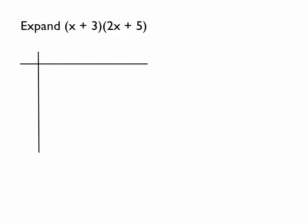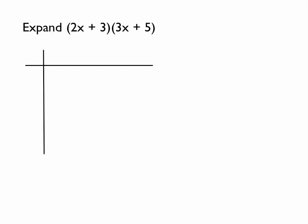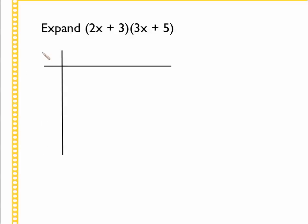So let's look at one more. Same process now. We do ourself a multiplication grid. Everything in this bracket goes on the top line. Make sure you take the plus with the three. Everything in this bracket down the side, three x, and then take the plus with five.